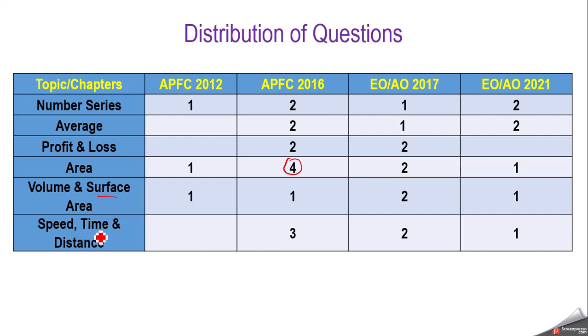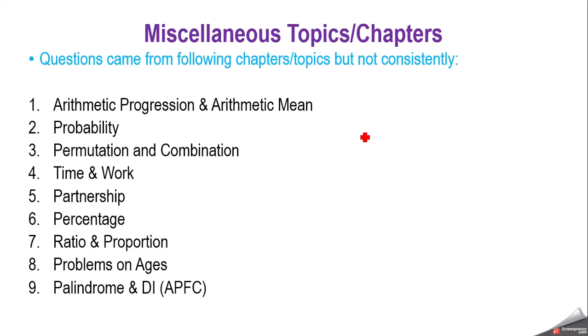Then there is speed, time, and distance — we got questions from this topic. Based on my analysis, these are the important chapters which have got questions repeated consistently every time the EPFO examination was conducted. Then there are some miscellaneous chapters or topics from where questions were asked in previous examinations but were not repeated consistently.